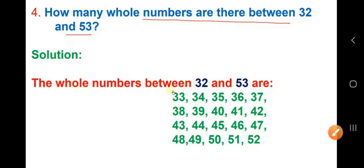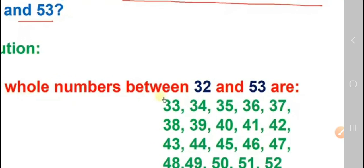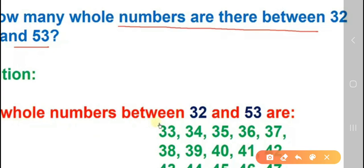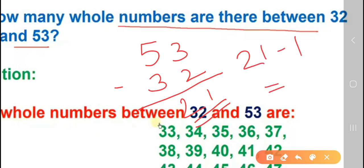So, if it is 53 and 32, how you can do? So, now you select 53 minus 32 you are doing. Now, 3 minus 2, 1. 5 minus 3, 2. 21 is the answer. Now, 21 minus 1 you will do. So, your answer will be 20. There are 20 numbers in between.